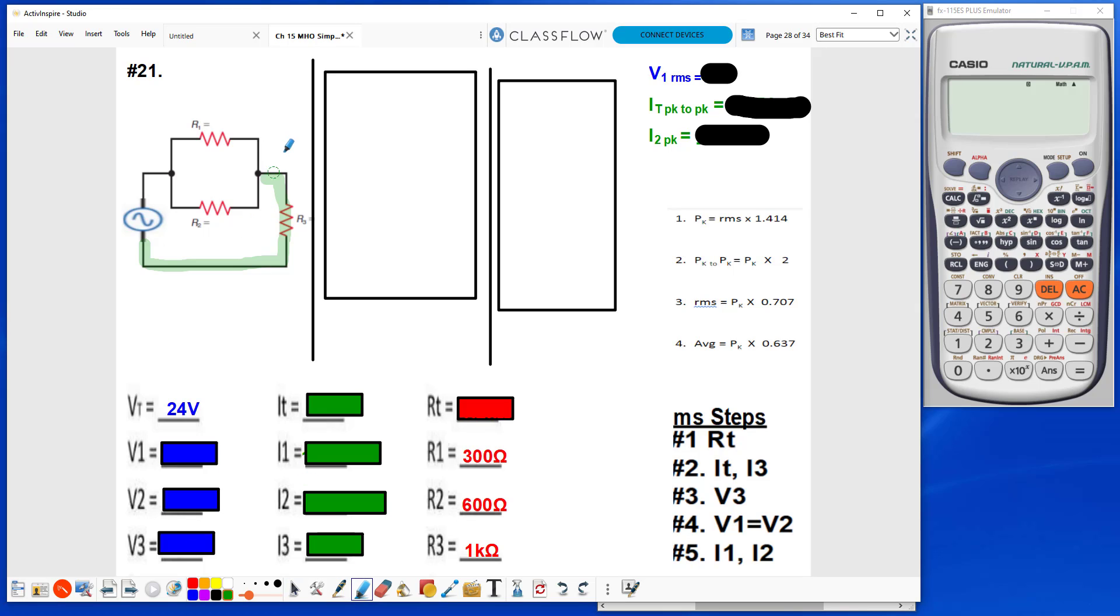As I continue to follow the current, I see that the current can split at this point right here, and through R1 and R2, there is more than one pathway for current to flow through. So that tells me that R1 and R2 are in parallel.